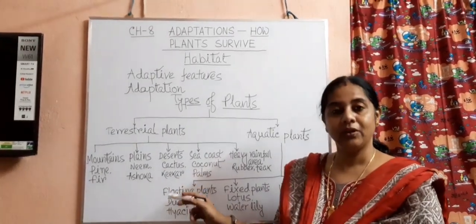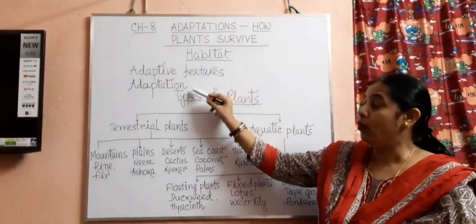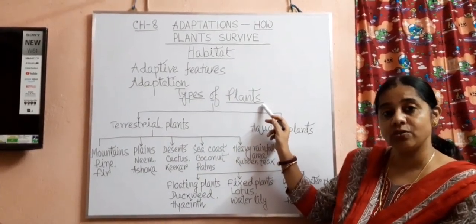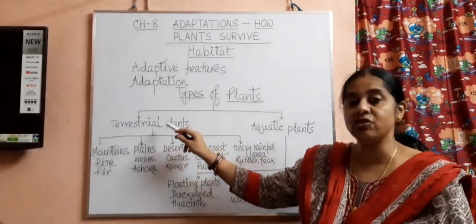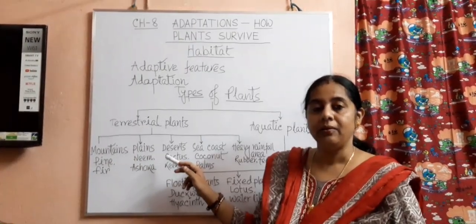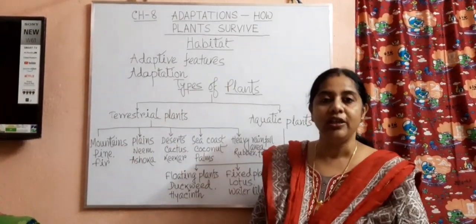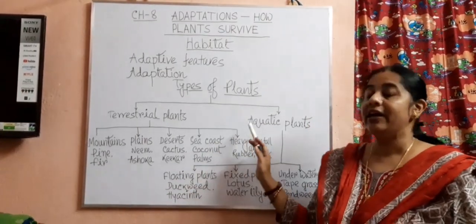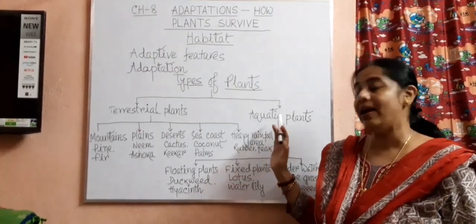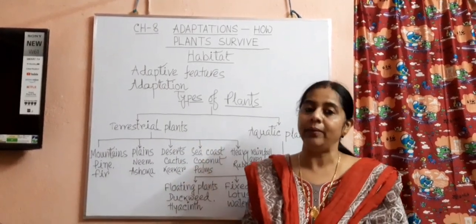Today, we have discussed habitat, adaptive features, what is adaptation, types of plants surviving on the earth's surface, and terrestrial plants. Among terrestrial plants, we studied about mountains, plains, and deserts, and the adaptive features of plants in each. In our next class, we will discuss plants of sea coasts, areas with heavy rainfall, and aquatic plants. Learn up to this carefully. Take care.